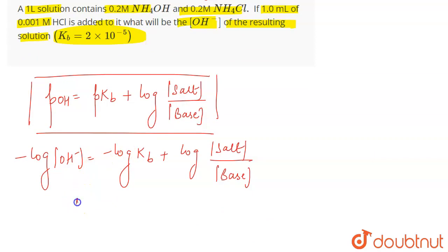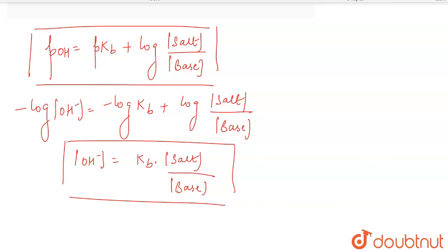Now, this equation can be reduced as concentration of OH- is equal to Kb into salt upon base because when we apply the property of log, this is what we will be getting and log and log will get cancelled out. So, from here, what will be the concentration of OH-?